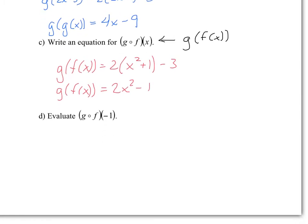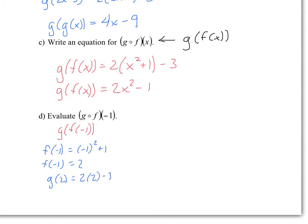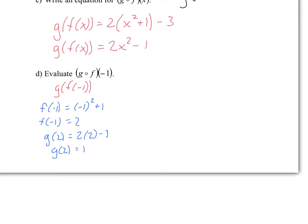Now I want to evaluate g of f of negative 1. I could do this in two different ways. The first way: plug in negative 1 into function f, which gives you 2, because negative 1 squared is 1 plus 1 is 2. Then take that value of 2 and plug it into g. So g of 2 is equal to 2 times 2 minus 3, which gives you 1. So g of f of negative 1 equals 1.